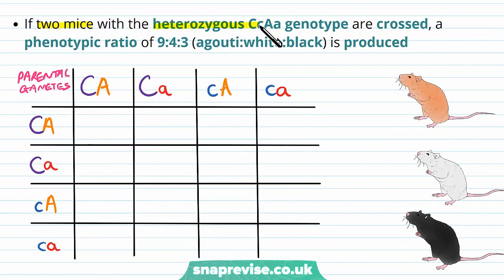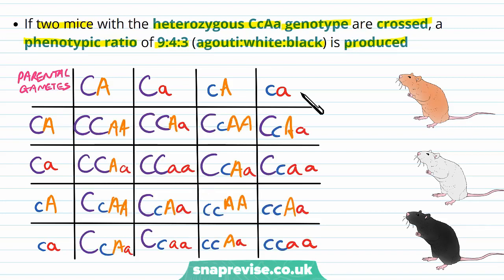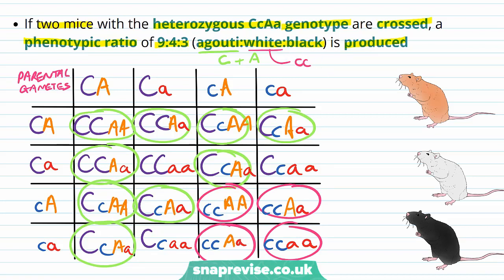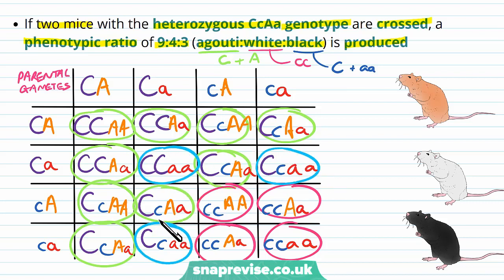If two mice with the heterozygous C and A genotype are crossed, then a phenotypic ratio of nine agouti to four white to three black is always produced. Nine have a large C and large A, allowing both pigment and agouti colour. Four white mice have homozygous little c's, so no colour regardless of the second gene. Three black mice have a large C allowing colour, but homozygous little a's giving black only with no agouti.